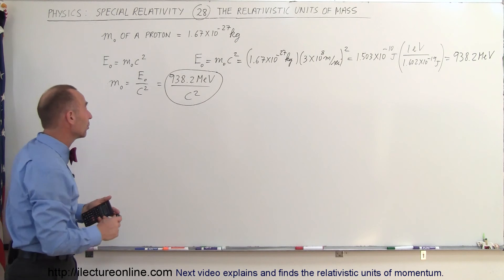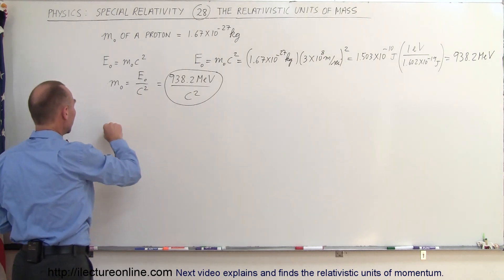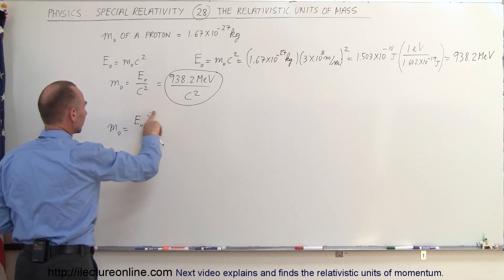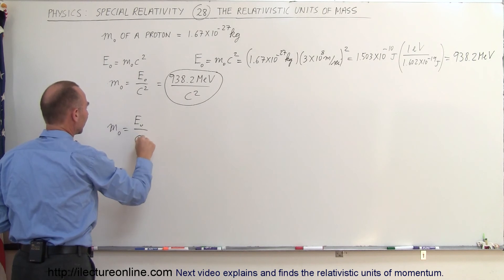So what is the rest mass energy of an electron? Well, it turns out the rest mass of an electron is equal to the energy of an electron divided by C squared.